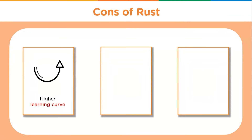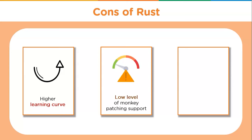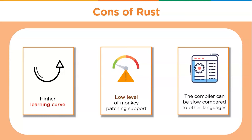For the cons of Rust: learning Rust is not easy compared to other languages, giving it a higher learning curve. It has a low level of monkey patching support compared to Python and Perl — monkey patching refers to modifying a class or module at runtime. Moreover, the Rust compiler is slow compared to some scripting languages.